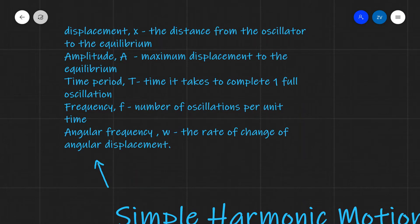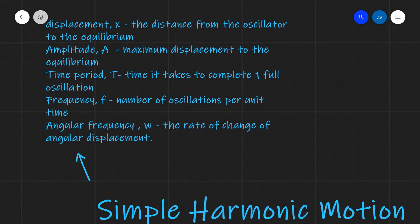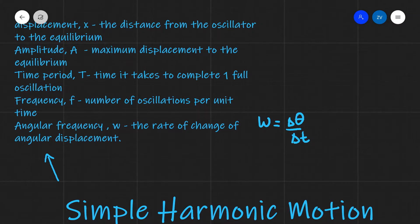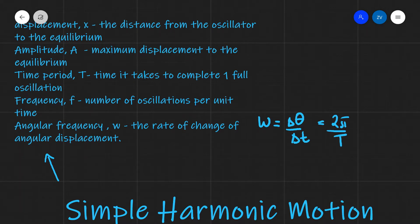As a reminder, angular frequency is different to angular velocity — it's actually a scalar quantity, the magnitude of angular velocity. However, the mathematics behind the two quantities is exactly the same. Omega is the rate of change of angular displacement, and even when there's no circular motion happening, it's just how far through the cycle we've gone. One full cycle is 2π and that occurs in one time period, so we can use omega = 2π/T and omega = 2πf.